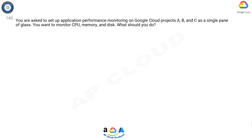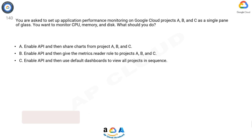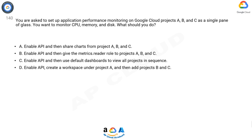Question 140: You are asked to set up application performance monitoring on Google Cloud projects A, B, and C as a single pane of glass. You want to monitor CPU, memory, and disk. What should you do? A) Enable API and then share charts from projects A, B, and C. B) Enable API and then give the metrics reader role to projects A, B, and C. C) Enable API and then use default dashboards to view all projects in sequence. D) Enable API, create a workspace under project A, and then add projects B and C.